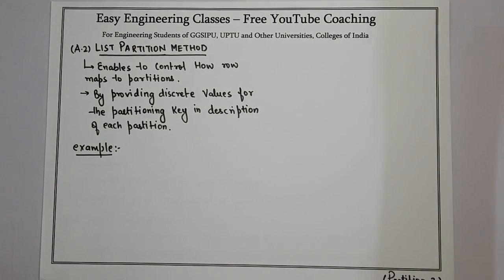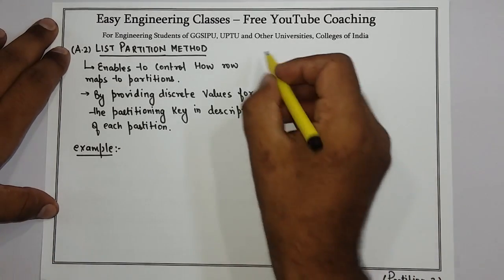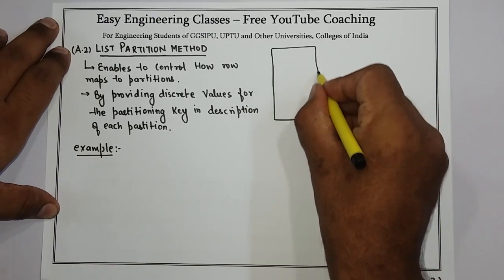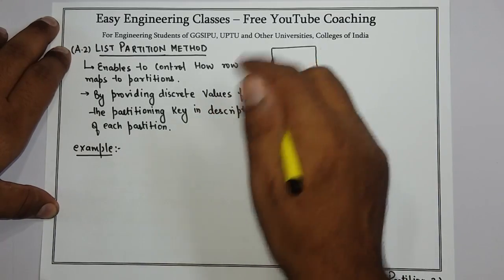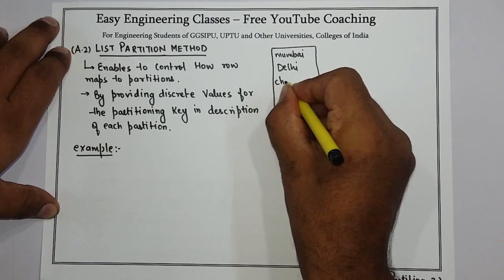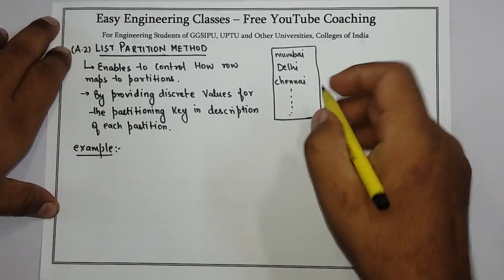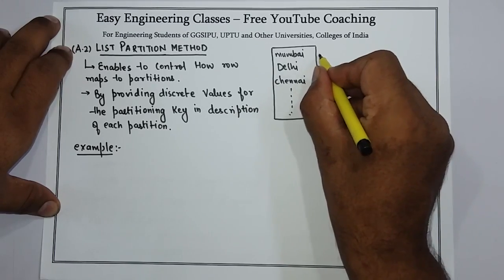The next method of single level partitioning is the list partition method. In list partitioning, we are enabled to control how each row maps to a partition. It is implemented by providing discrete values for the partitioning key in the description of each partition. For example, if I have sales data from all over the country — Mumbai, Delhi, Chennai, and so on — and I want to partition this data based on region, I can do that with the help of list partitioning.